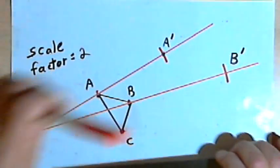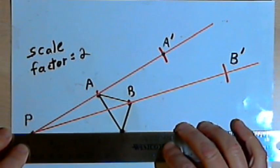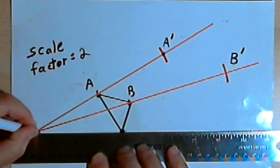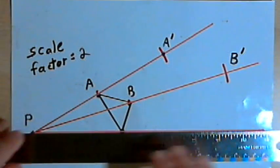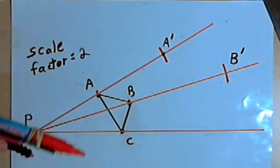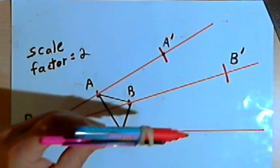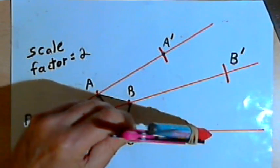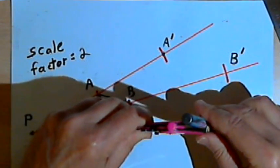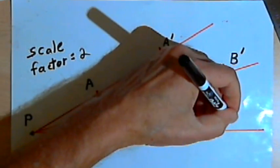And one more time. This time the ray is going to start at point P and go through point C. Take my compass, set it for the length of line segment PC, and repeat that length with an arc. That's going to give me point C prime.